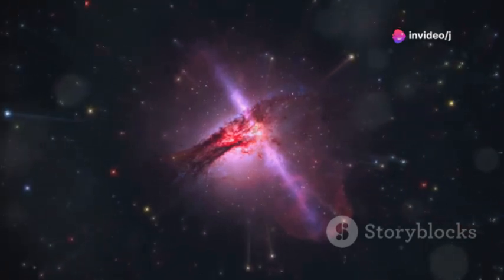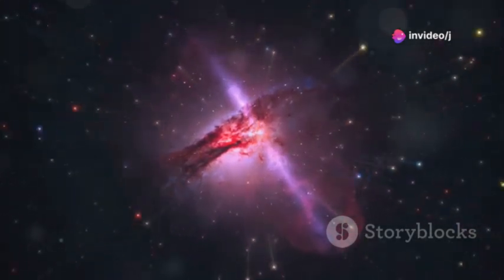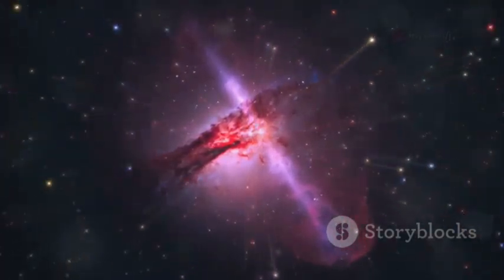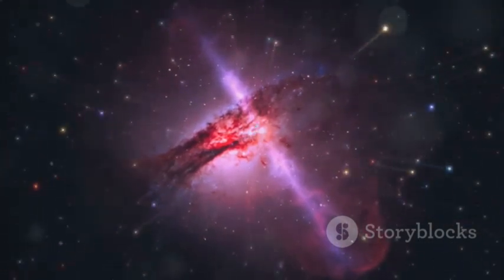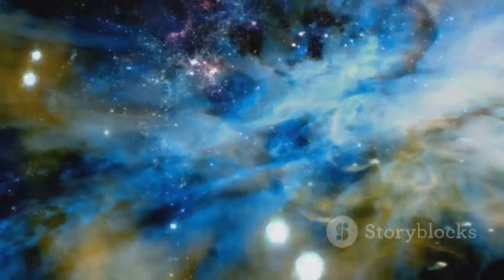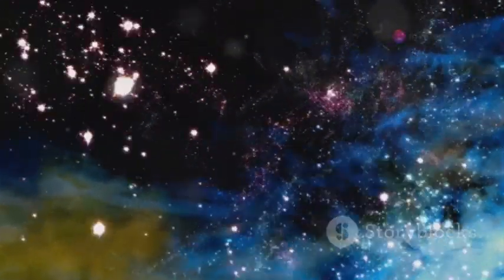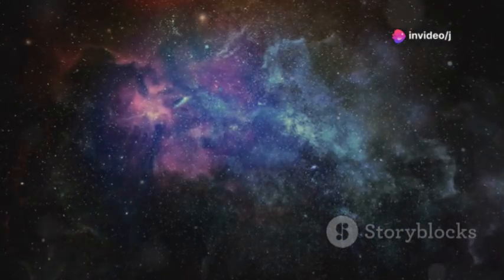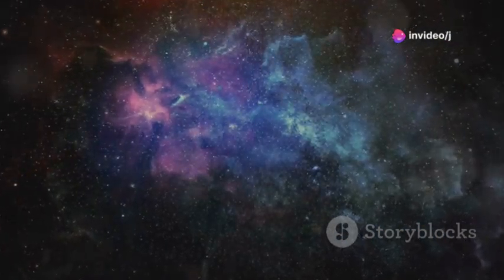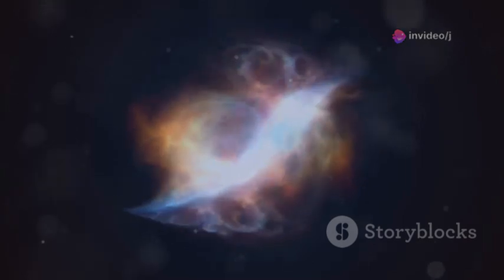Webb's instruments can analyze the light from these ancient galaxies, revealing their age, chemistry, and star formation rates. We're learning how the first elements were forged and spread across the cosmos. Each ancient galaxy is a clue to our own origins. Webb is showing us the universe's first chapters, when darkness gave way to light.